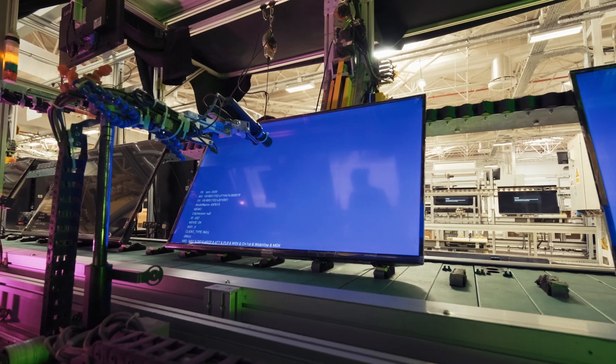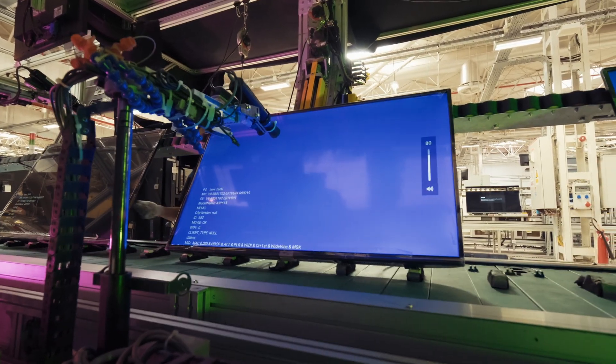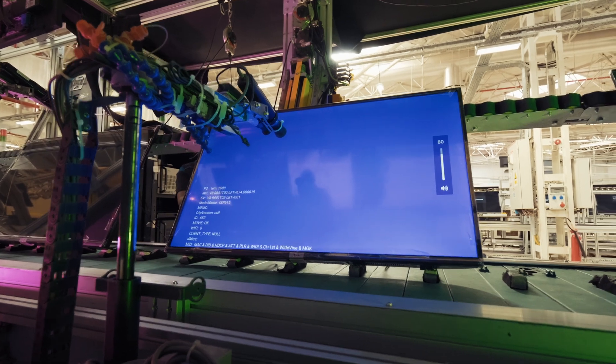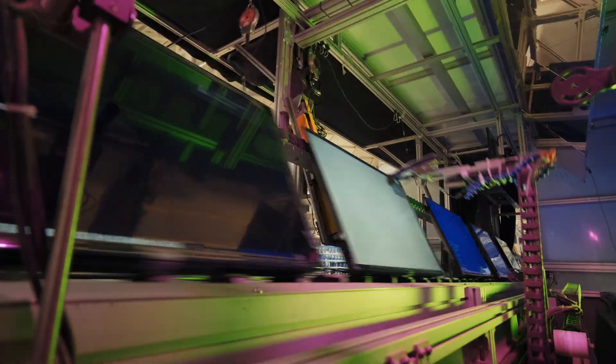Automated Optical Inspection systems scan each module for defects such as dead pixels, color uniformity issues, and alignment problems. This ensures that only the highest quality modules proceed to the next stage of manufacturing.